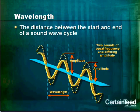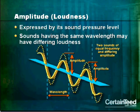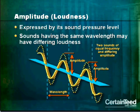The second property, wavelength, is the distance between the start and the end of a sound wave cycle. And amplitude, or loudness, is the third property. This illustration shows two sounds with the same wavelength, but with different amplitudes, or loudnesses.